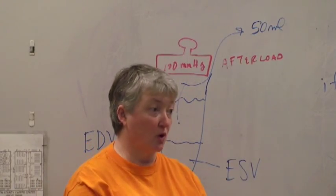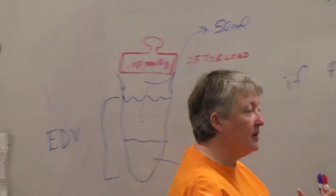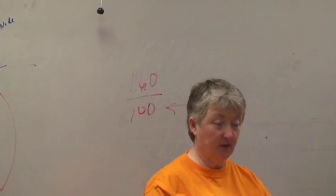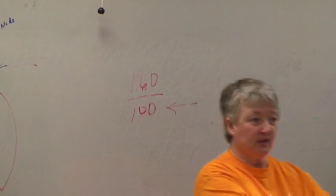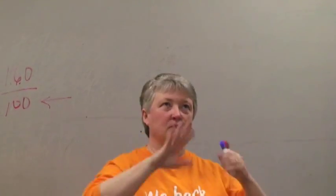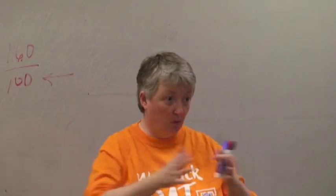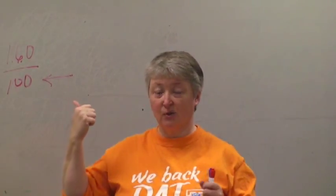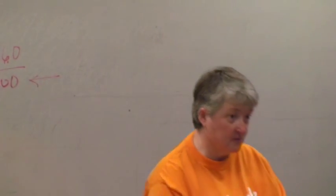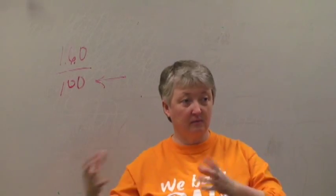What happens is the heart contracts stronger in order to compensate, and particularly on the left side, if you overwork those ventricles, they actually get weaker — unlike skeletal muscles, which get stronger with overwork. If the heart has to work too hard beyond its normal parameters, the heart enlarges, the force of contraction decreases, and you eventually go into congestive heart failure.